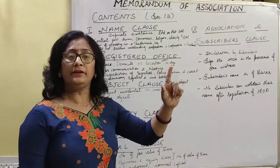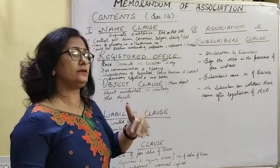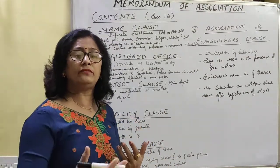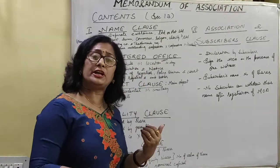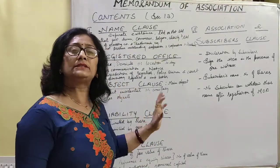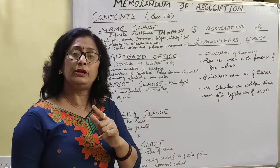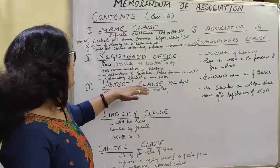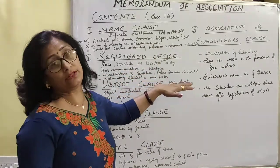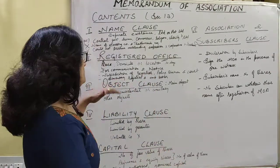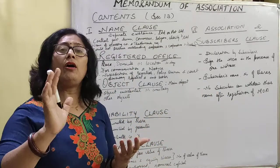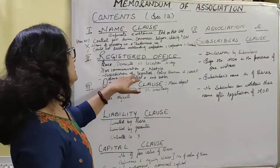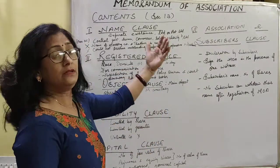You have to mention that address. It is required for communication, notices, and correspondence done with the authorities, shareholders, suppliers, creditors, and debenture holders. The registered office is also required for the jurisdiction of the Registrar — wherever your registered office is, the Registrar of that particular state or city will be in your jurisdiction. You have to complete all formalities and documentation of the company with that Registrar.